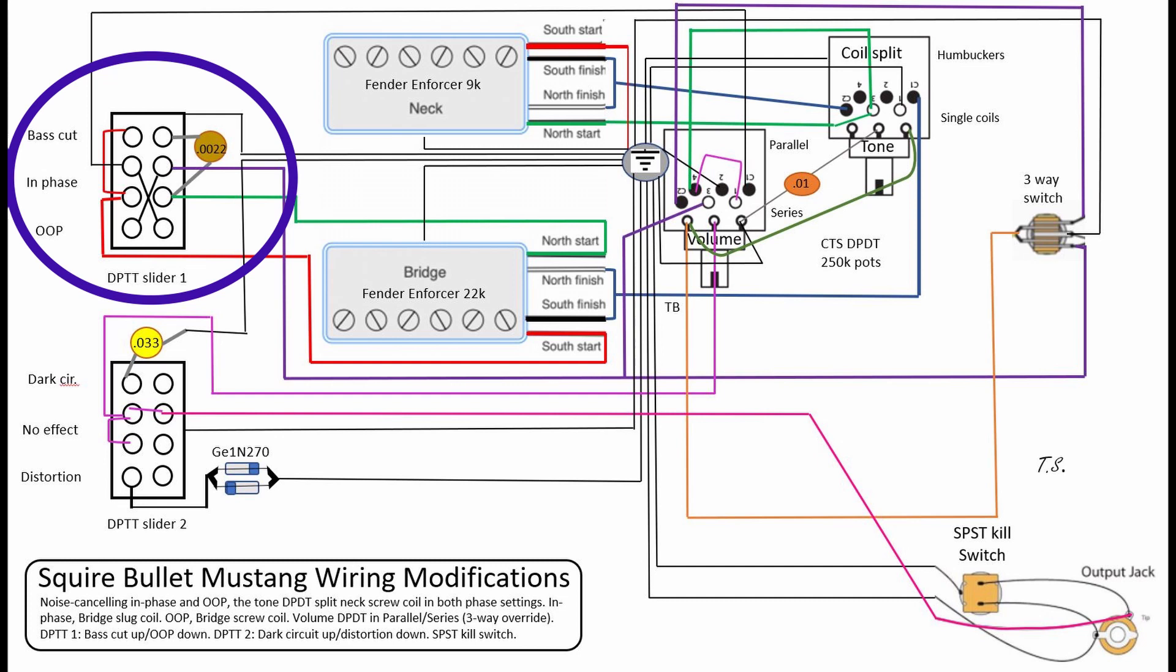So you can see here that the treble cut and the out of phase switch really only affect the bridge pickup. So it'll only have a sort of taming effect on the bridge pickup, which is the only way I could really work it. It actually makes sense to brighten up the neck pickup because it tends to be the most muddy pickup, but in combination, you still get a brighter sound. So in the middle, obviously, it's in phase, nothing's happening. And then if you push it down, that's the out of phase switch.